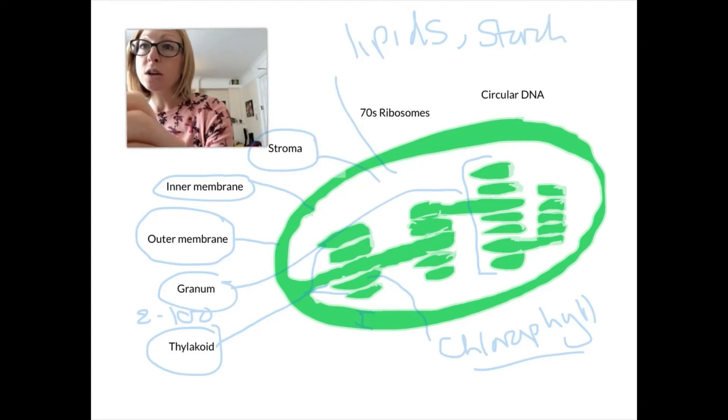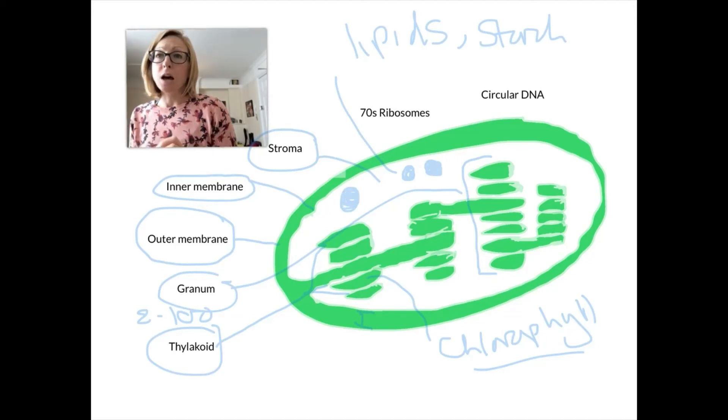The starch and the lipids would appear as quite a large molecule, usually in a droplet or a shape like a spherical structure, and it would appear quite dark if it's an electron micrograph image that you're looking at. They're just stored in there, made from the process of photosynthesis.